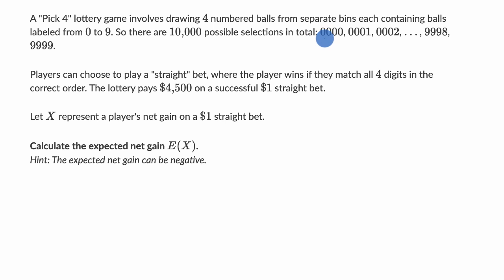For example, you could get 0, 0, 0, and 0, or 0, 0, 0, and 1, all the way up to 9,999 — four nines.